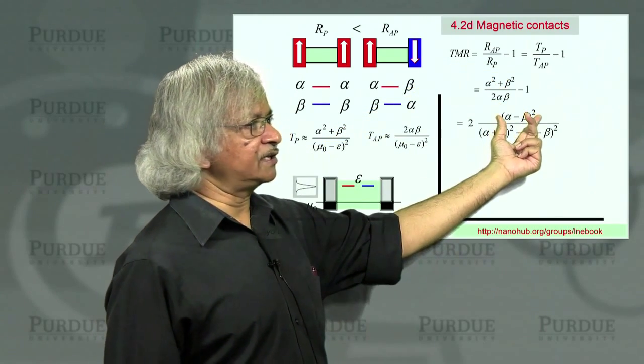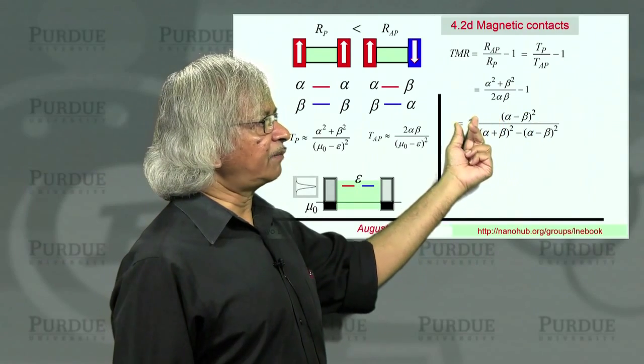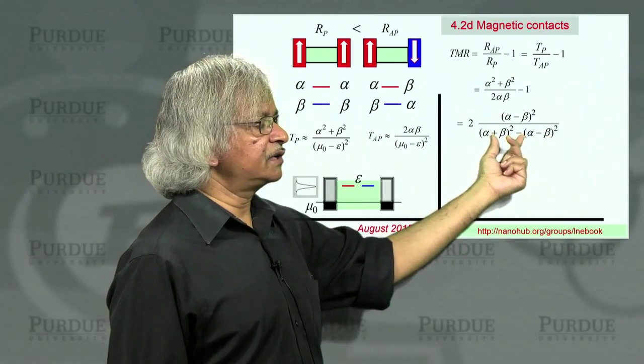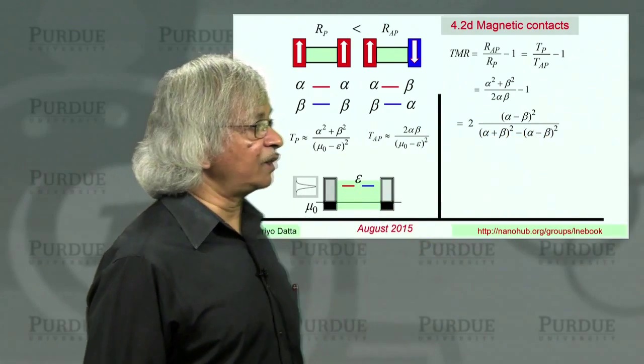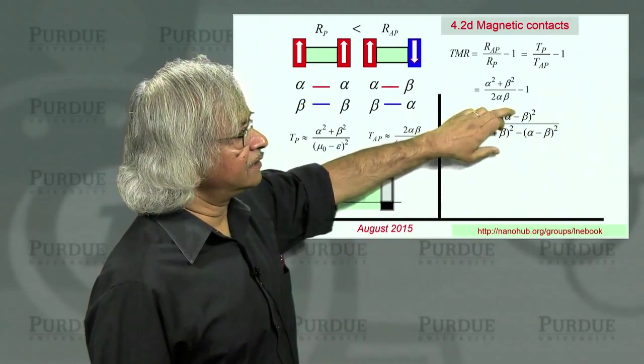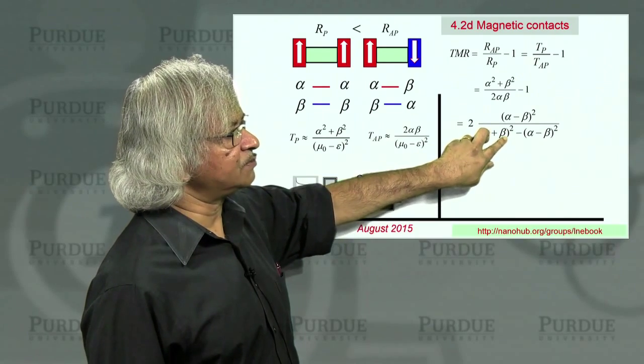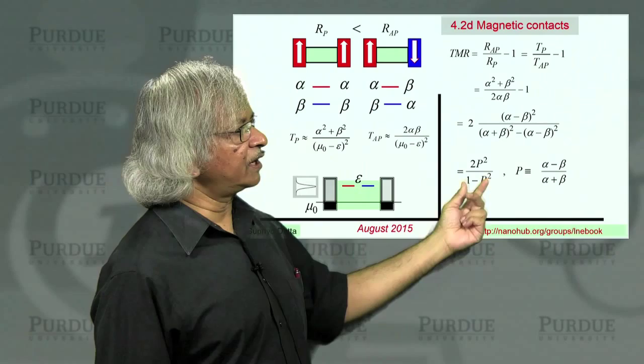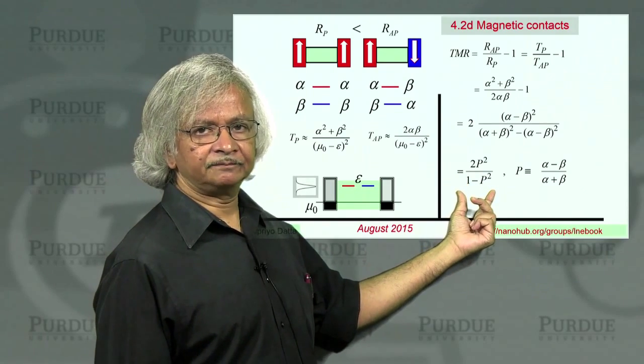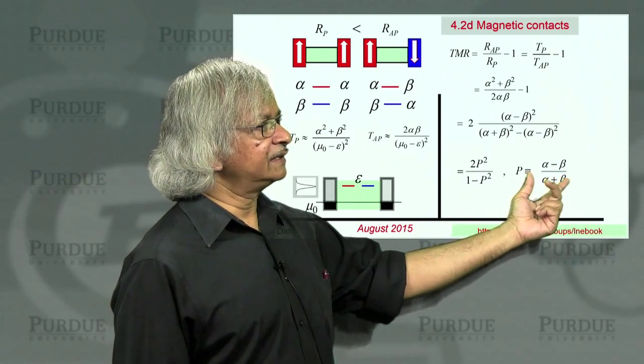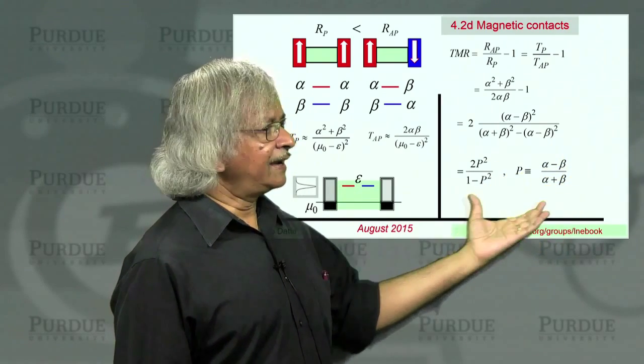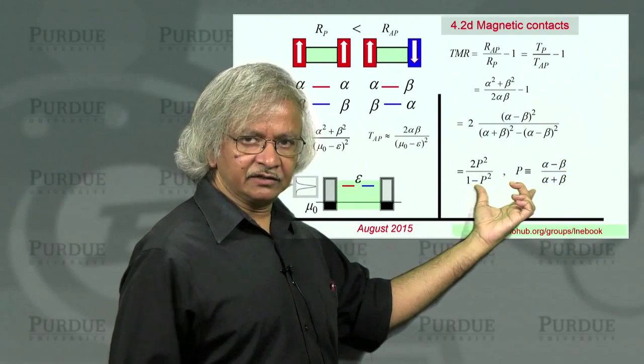And the numerator then is alpha squared plus beta squared minus 2 alpha beta, which is alpha minus beta squared. If I multiply by 2, you have 4 alpha beta, which is like the difference between those. And the reason I'm writing it this way is you can then divide through by alpha plus beta squared, and you could write it in the form of 2p squared over 1 minus p squared, where p is this alpha minus beta over alpha plus beta.